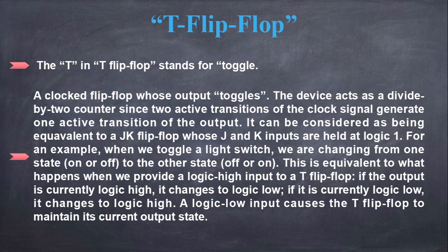For an example, when we toggle a light switch, we are changing from one state on or off to the other state off or on. This is equivalent to what happens when we provide a logic high input to a T flip-flop. If the output is currently logic high, it changes to logic low. If it is currently logic low, it changes to logic high. A logic low input causes the T flip-flop to maintain its current output state.